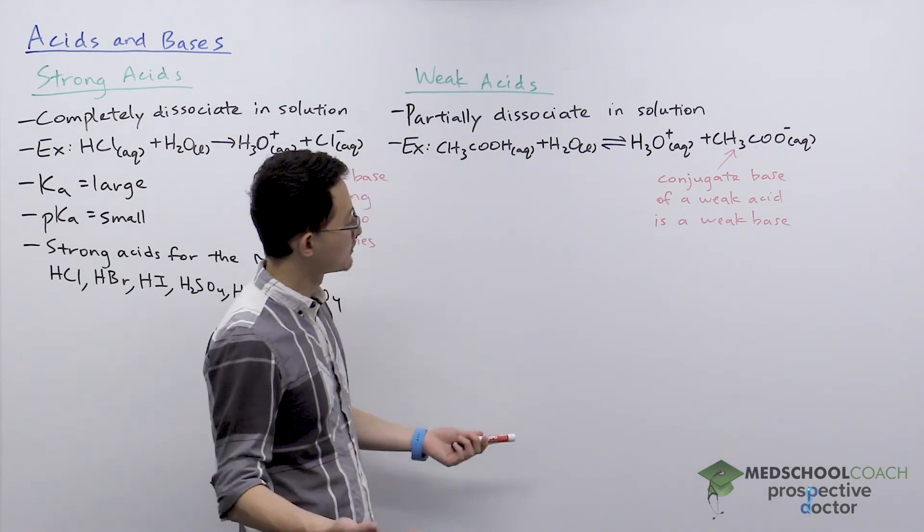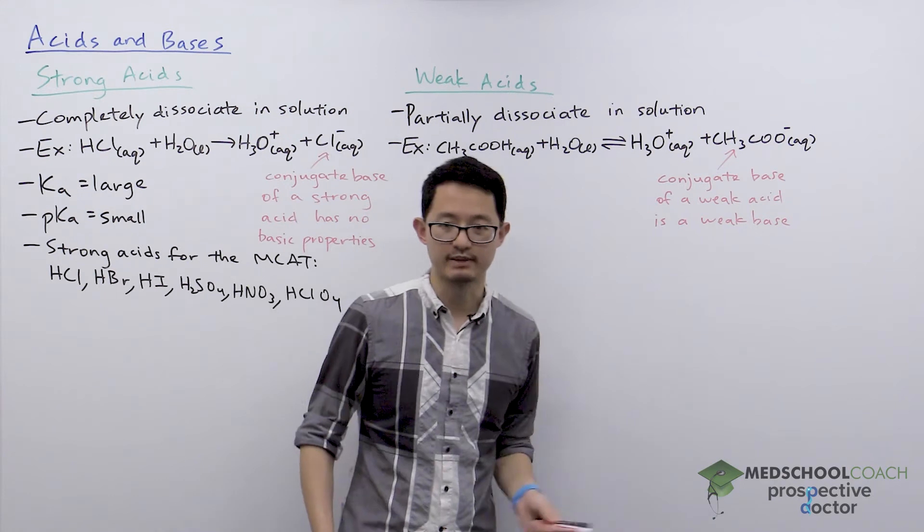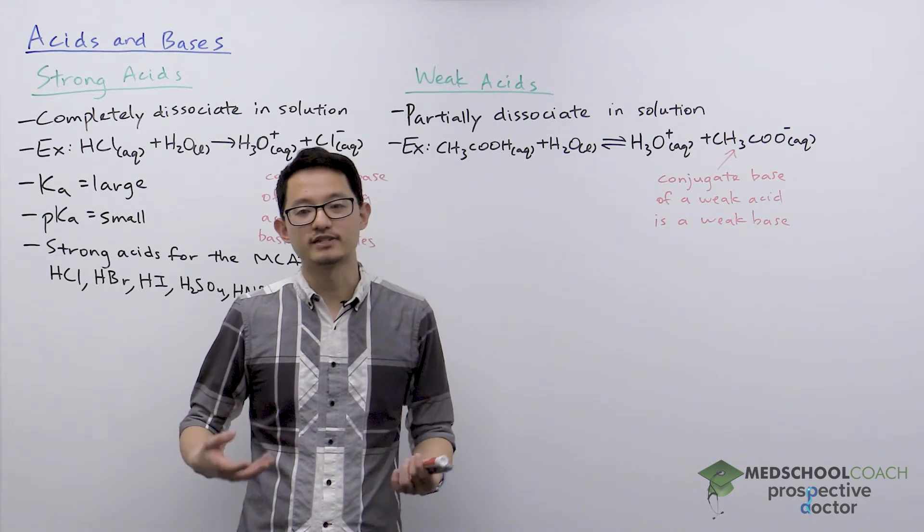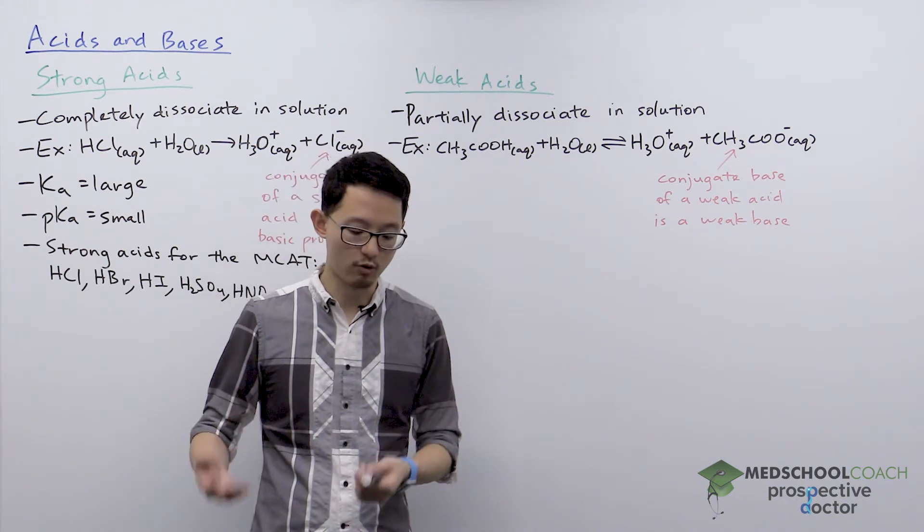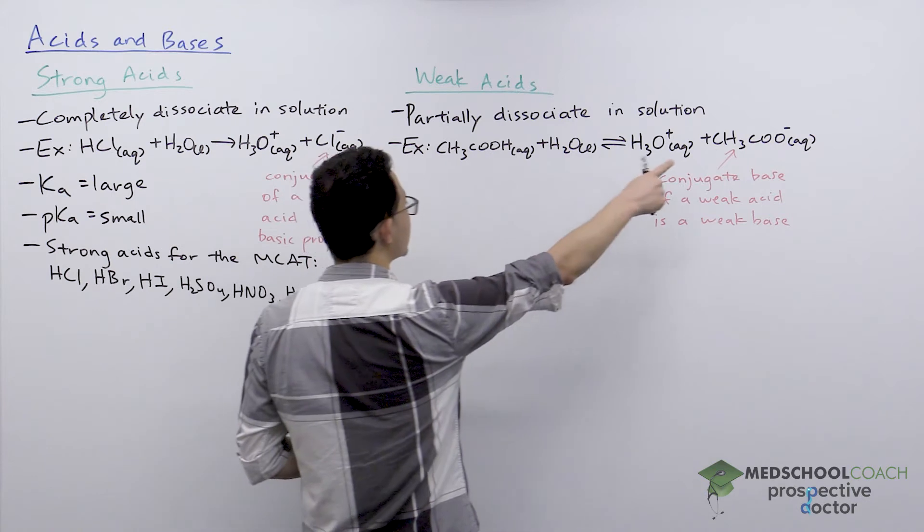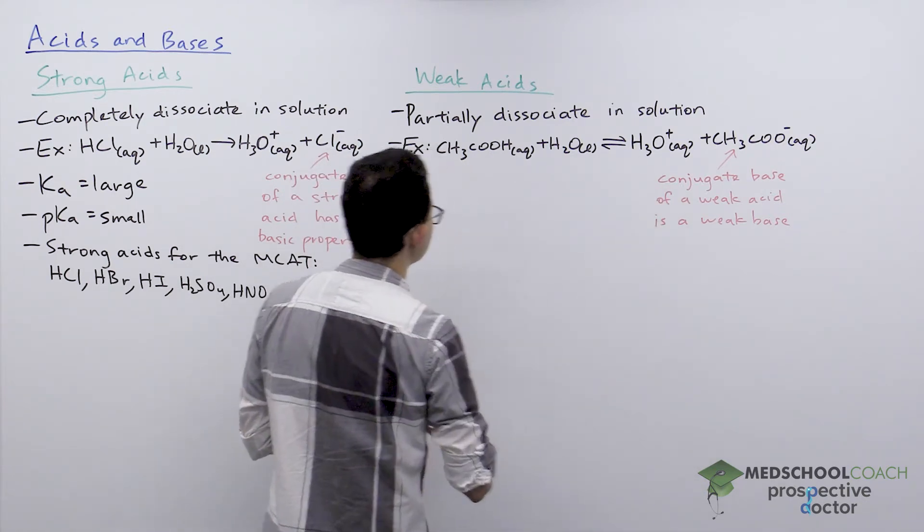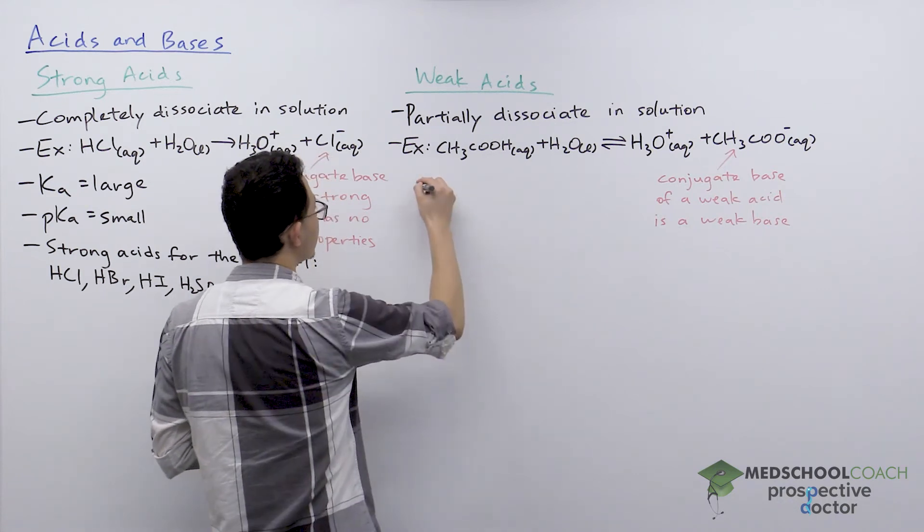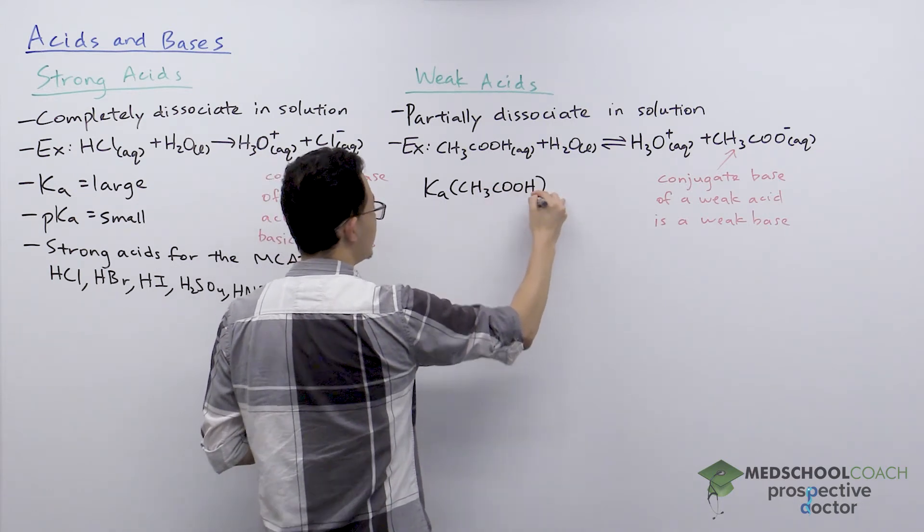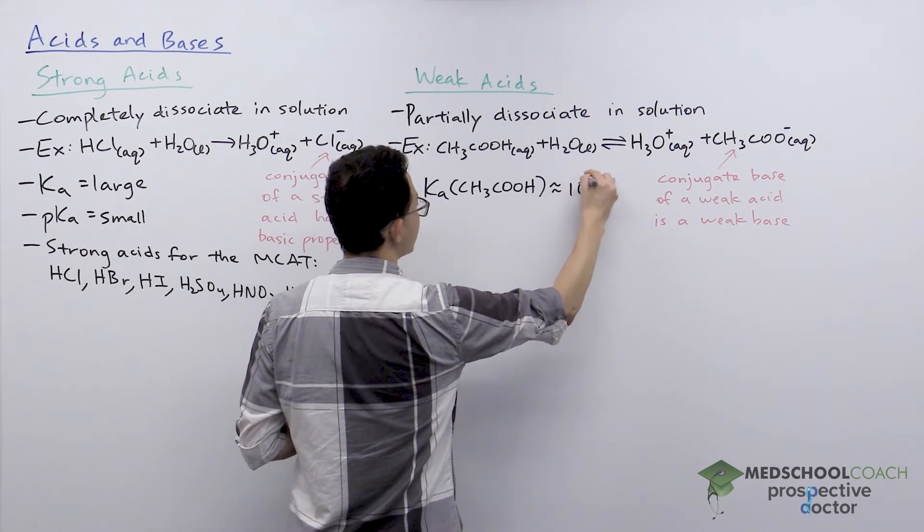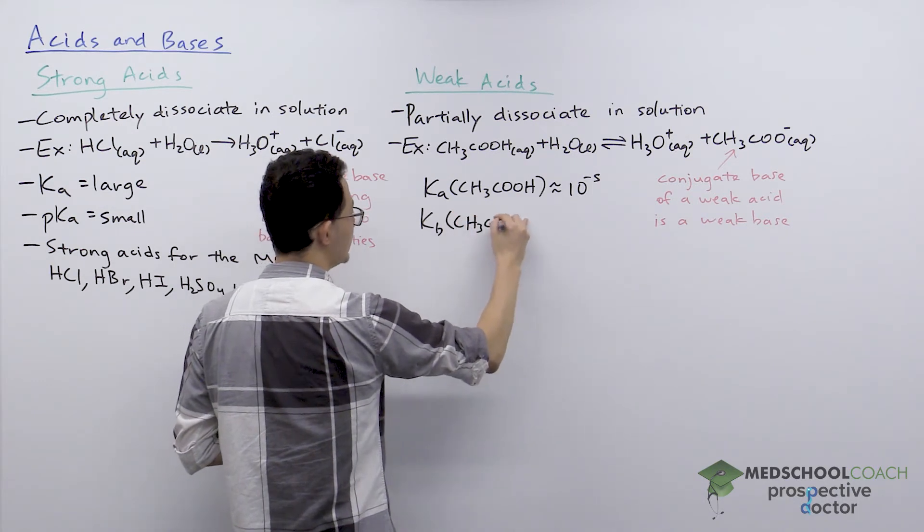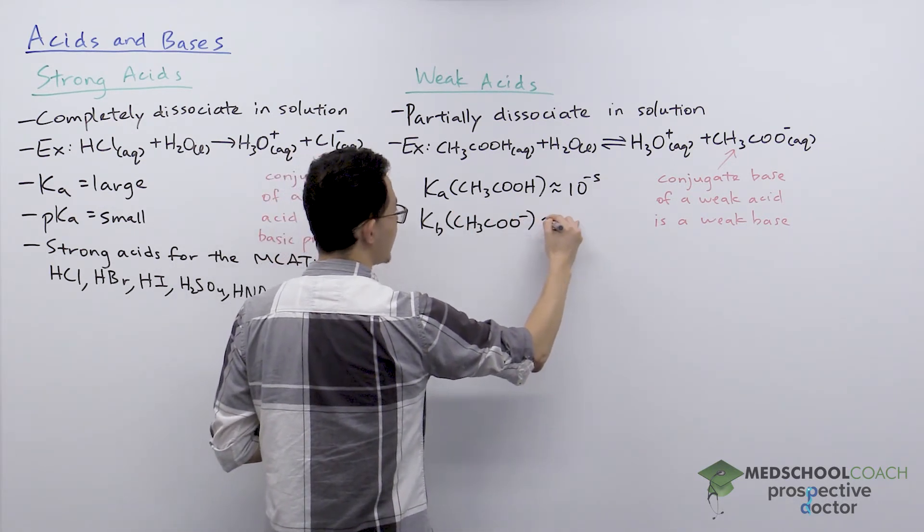Now, it might be a little confusing, though, because if you think about it, if this is a weak acid and this is a weak base, what is the molecule? Is it an acid or is it a base? So here, there's actually a rule that you can use for classifying molecules as acids or bases. And you're essentially comparing the Ka of the acid and the Kb of the conjugate base. So specifically in this example, we know that the Ka of acetic acid, CH3COOH, this is about equal to 10 to the minus 5. The Kb, how strong the acetate is as a conjugate base, is then approximately equal to 10 to the negative 9.